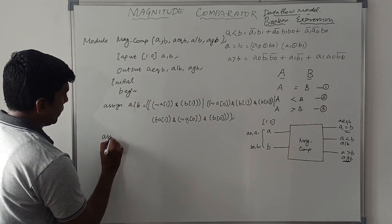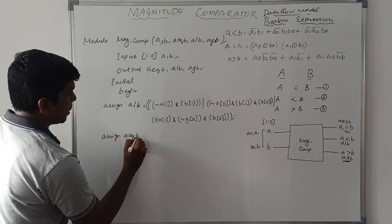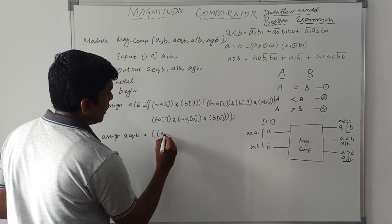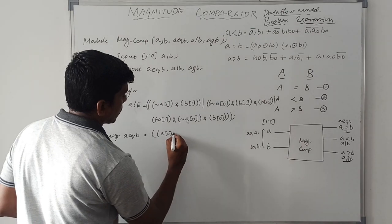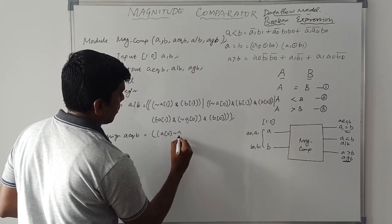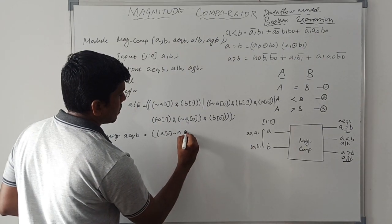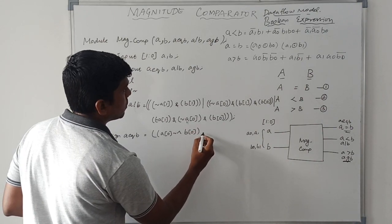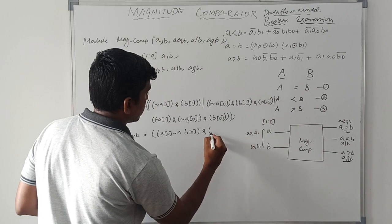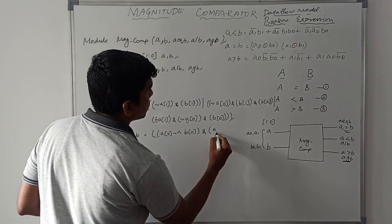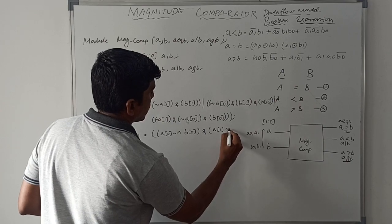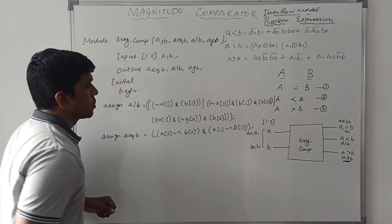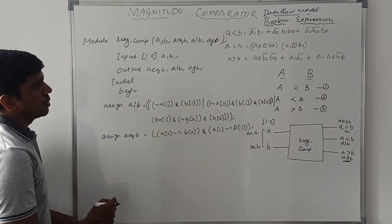Then come to A equal to B. Assign A equal to B using the XNOR expression: A0 XNOR B0 AND A1 XNOR B1. The caret symbol (^) followed by tilde represents XNOR in Verilog. So the expression is (A0 ~^ B0) AND (A1 ~^ B1). That is the equation for A equal to B.